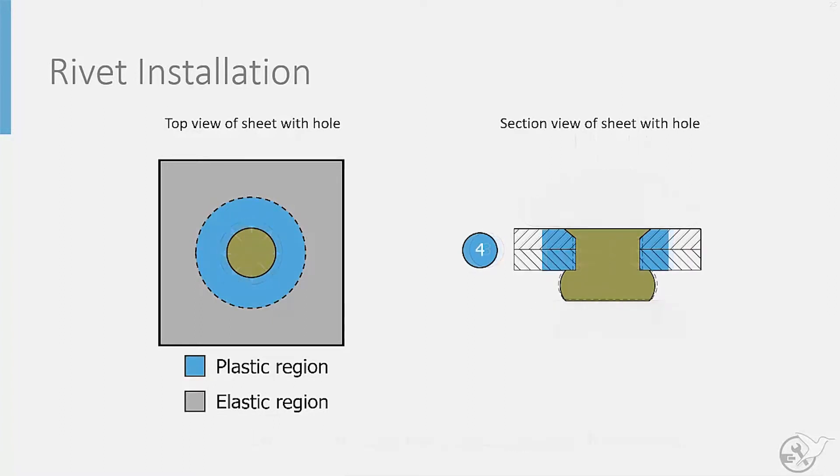In the final step, the rivet installation force is removed, and the sheet tries to relax, just like when a rubber band is unloaded and shrinks back to its original size. But due to plasticity, the blue region around the fastener hole will be larger than it originally was.